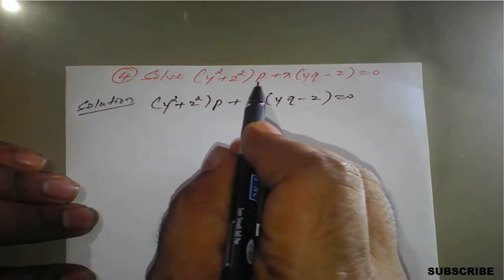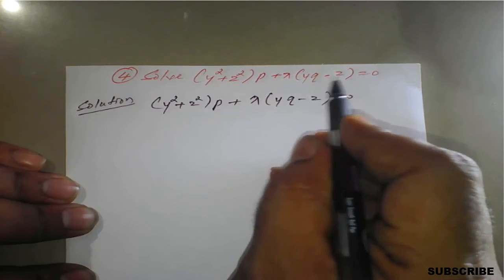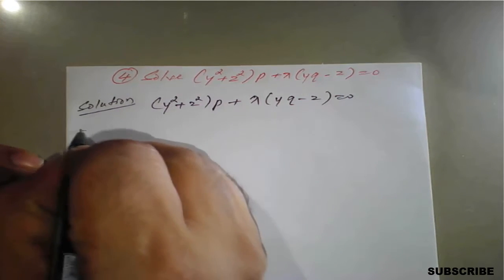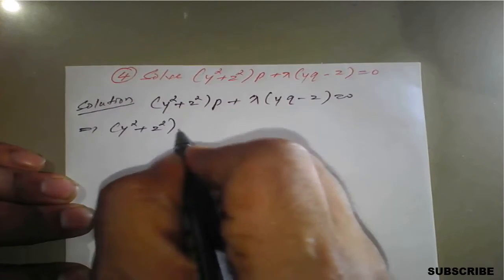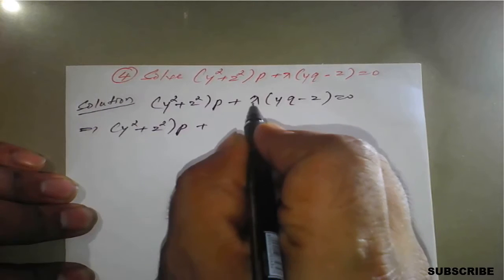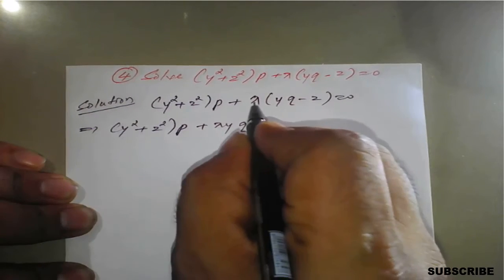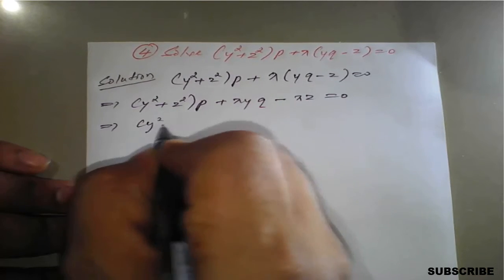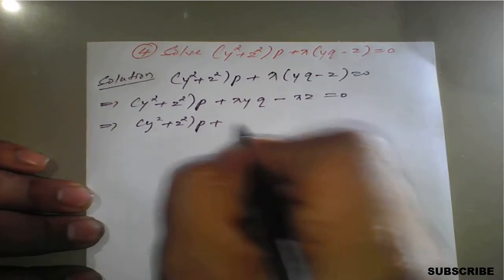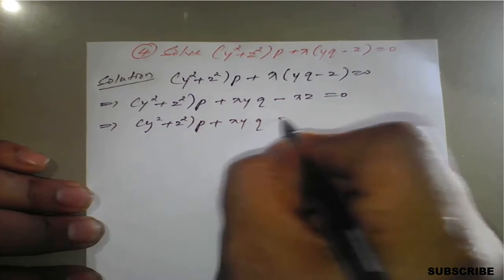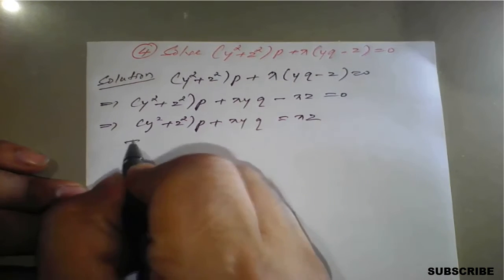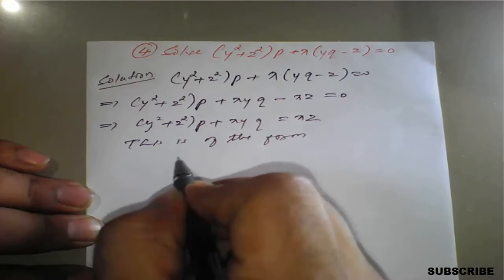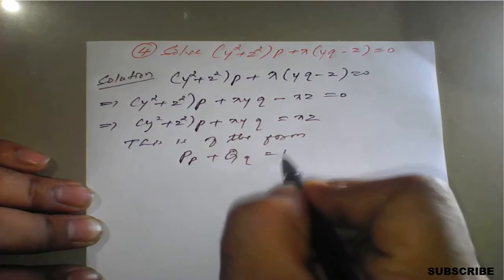The given equation is (Y² + Z²)p + X[YQ - Z] = Z. This is not in the standard Lagrange form, so we rearrange. Opening the bracket: (Y² + Z²)p + XYq - XZ = 0, or equivalently (Y² + Z²)p + XYq = XZ. This is now of the standard Lagrange form Pp + Qq = R.